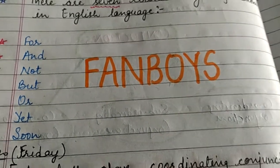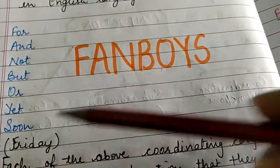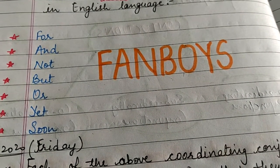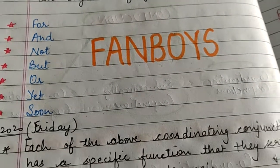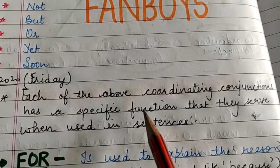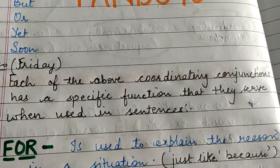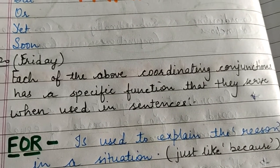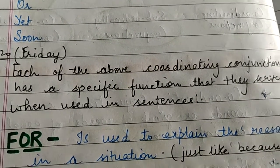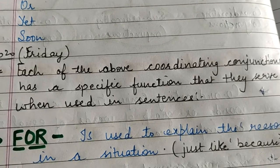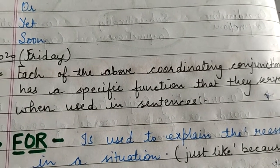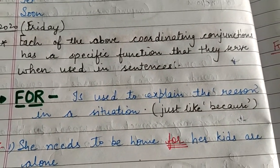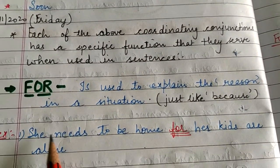I told you that all these coordinating conjunctions have their own function — how they are used in sentences. Each of the above coordinating conjunctions has a specific function that they serve and are used in sentences. So let us learn, one by one, the function of each coordinating conjunction.